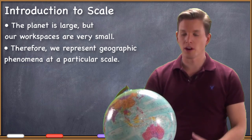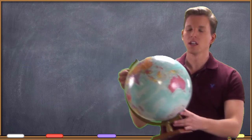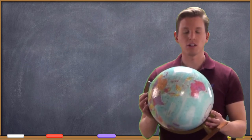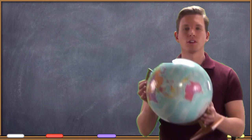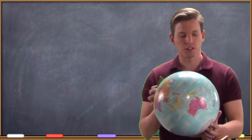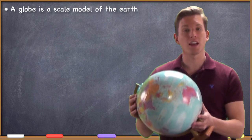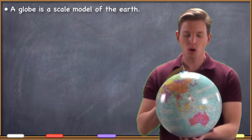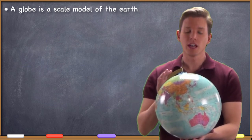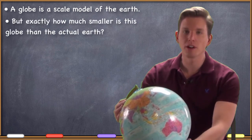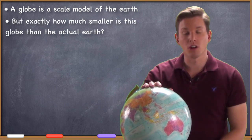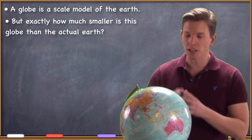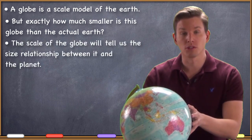The first thing I want to talk about in regard to scale has to do with the globe. Here is our globe we've been working with, and we said that it is a representation — a model of the Earth. The Earth is roughly spherical, this globe is roughly spherical, and so this represents a scale model of the Earth. This globe is obviously smaller than the planet. What we'd be very interested in knowing is exactly how much larger the Earth is than this globe, or how much smaller this globe is than the actual planet — what's the relationship between the size of the planet and the size of this globe?